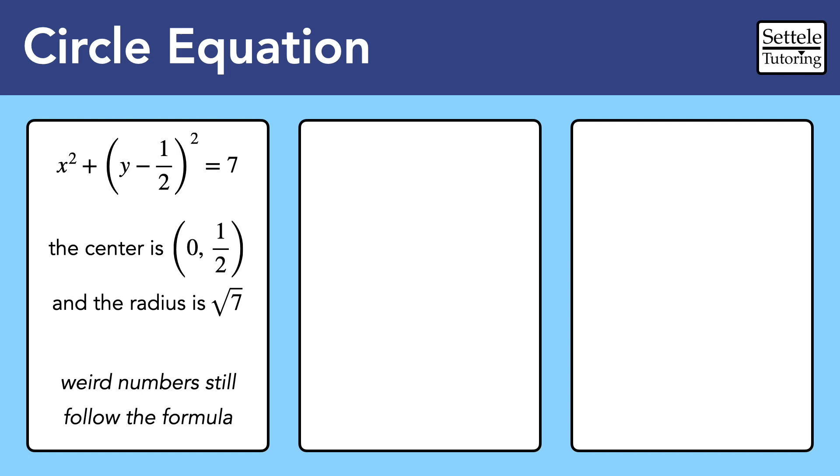The most common mistake is forgetting to take the square root of the right side to find the radius, especially when the number isn't a perfect square. But the square root of 7 is still a number, even if it looks messy in a calculator. Like any formula, the circle equation works even when the numbers are messy.